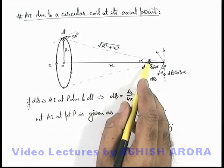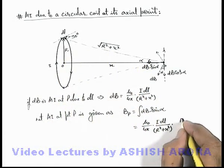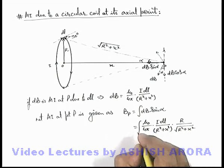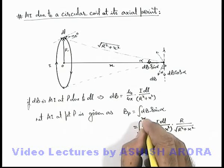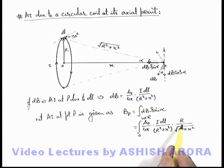Here in this triangle the value of sine alpha can be given as r upon root of r square plus x square, and we integrate it within limits from zero to 2 pi r for the whole circular coil. In this situation, all are constants, only dl is variable.